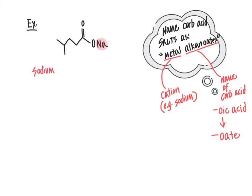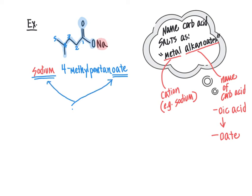The anion is the oxygen that carries the negative formal charge, which is in resonance with the negative charge being shared over the other oxygen as well. Together, the five-carbon chain with a methyl group at carbon four is called 4-methylpentanoate. The "oate" suffix, combined with sodium at the front, tells us this is a carboxylic acid salt — a carboxylic acid that has lost its proton, leaving an oxygen with a negative formal charge ionically complexed with the sodium cation.